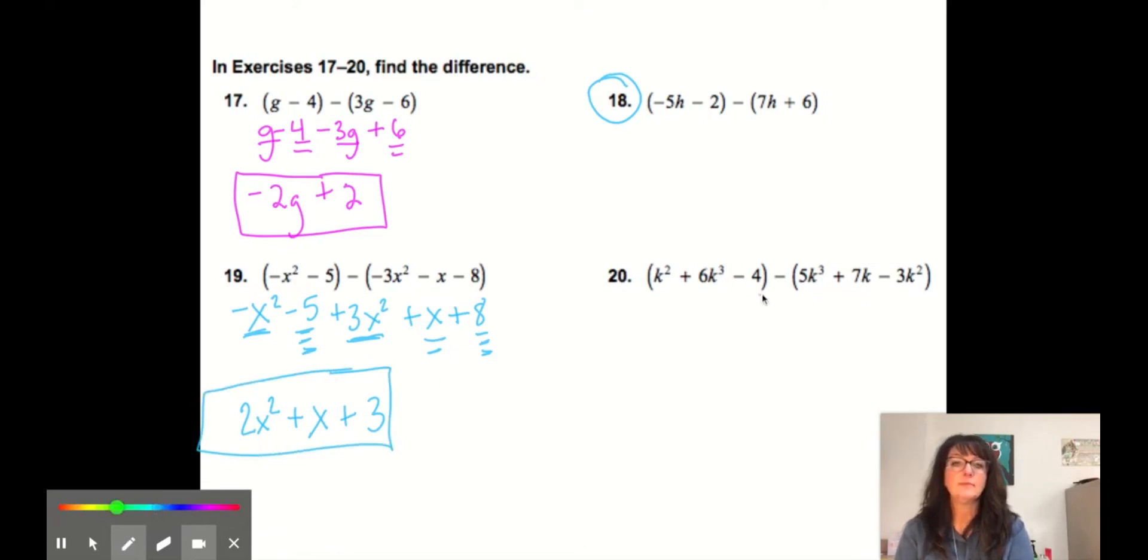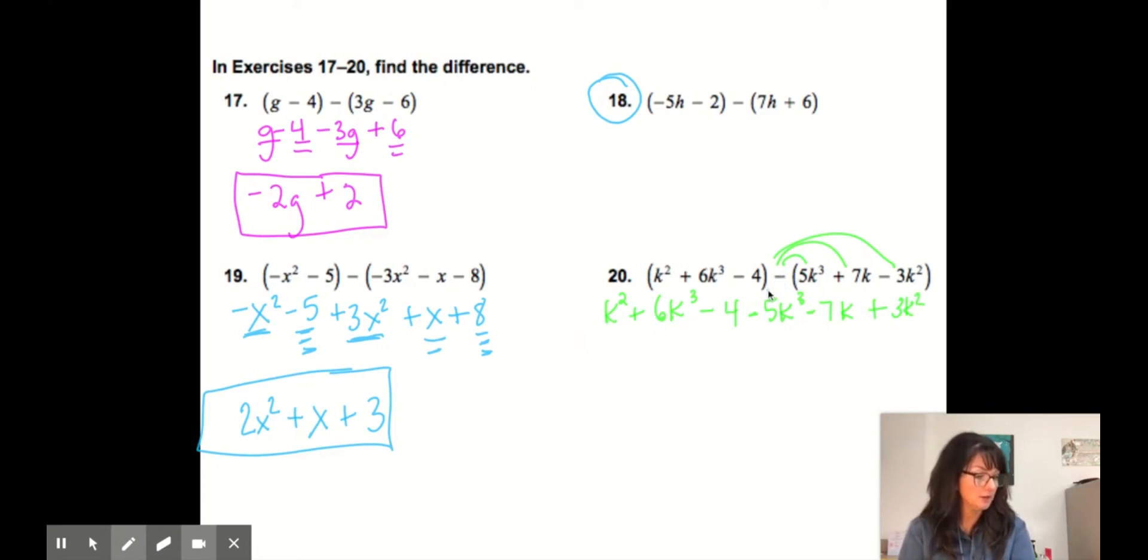And finally, this one, let's rewrite it. So k squared plus 6k cubed minus 4 minus the 5k cubed. So what I'm doing, it's kind of like distributing a negative 1. Negative 7k and a positive 3k. This is a really important step when it's preceding the subtraction. So here's a degree of 2, degree of 3, degree of 0, degree of 1.